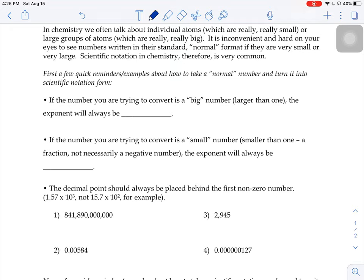So first, if the number that you're trying to convert is a relatively big number, larger than one, when you go to put that in scientific notation, the exponent's always going to be positive.